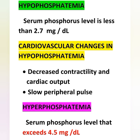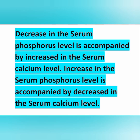Hypophosphatemia means serum phosphorus level is less than 2.7 milligrams per deciliter. Cardiovascular changes in hypophosphatemia include decreased contractility, decreased cardiac output, and slow peripheral pulse. Hyperphosphatemia means serum phosphorus level exceeds 4.5 milligrams per deciliter. An important point: when serum phosphorus level decreases, serum calcium level increases — they have an inverse relationship.